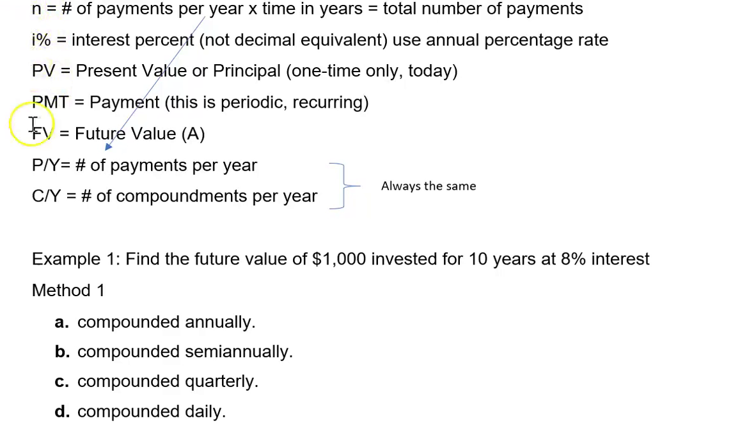So everybody should have a screen that has N, I percent, PV, PMT, FV, P/Y, C/Y and a brief explanation of these is as follows.